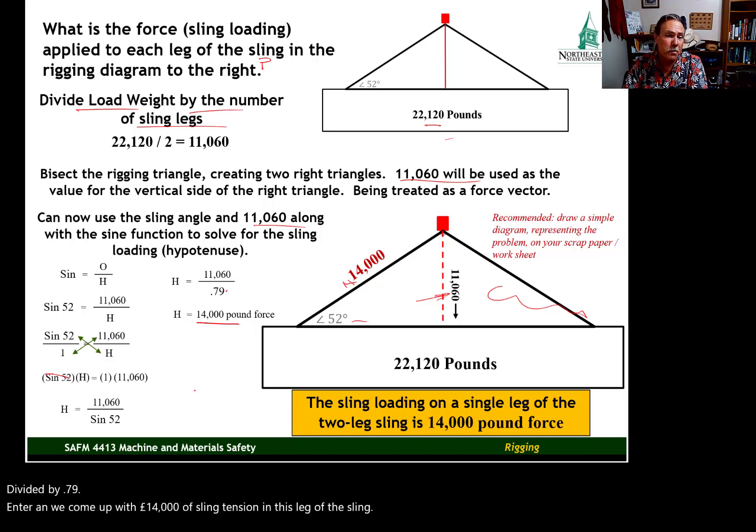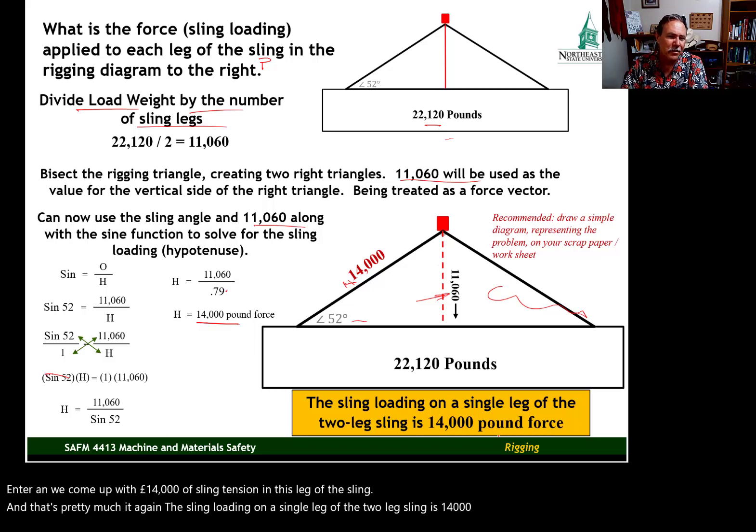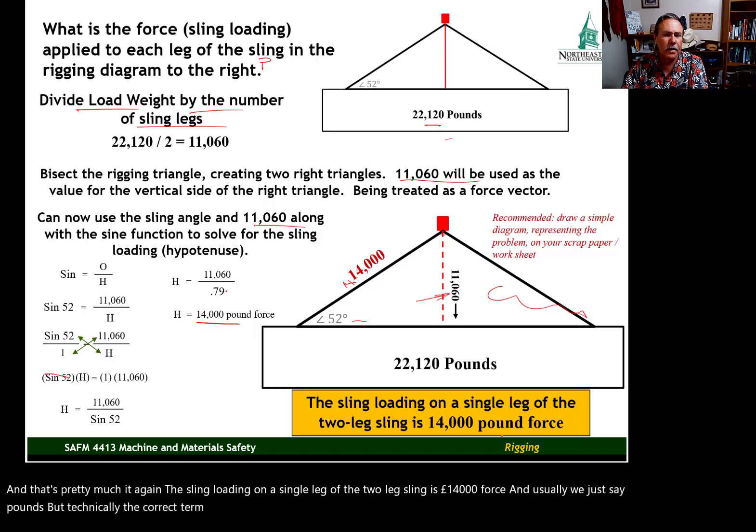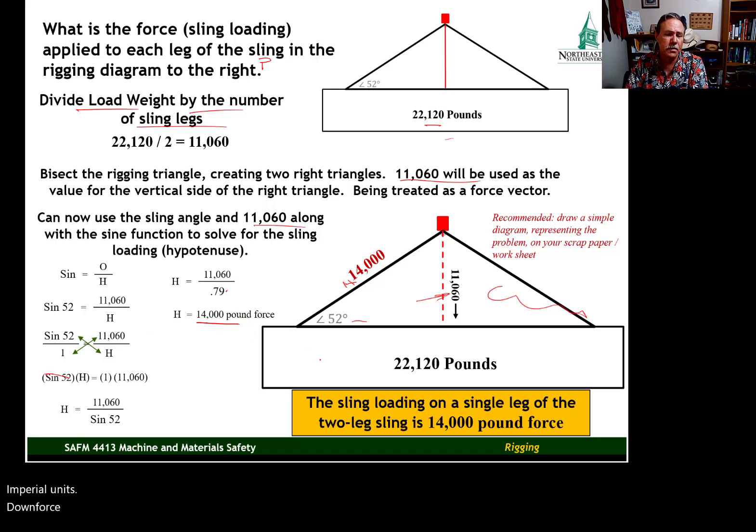And that's pretty much it. The sling loading on a single leg of the two-leg sling is 14,000 pound force. And usually, we just say pounds, but technically, the correct term is pound force. When we do a metric problem, they have different units. And for imperial units, we're pound force. For metric units, it's newtons. But that's it for this first example.